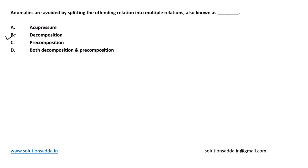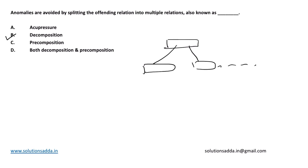What is decomposition? Decomposition is the breaking of a single relation into one or multiple relations. With decomposition, various anomalies like bad design, inconsistency, or redundancy are avoided. Therefore, when we split the offending relation into multiple relations, we call it decomposition.